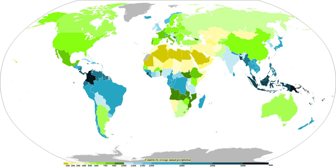A concept used in precipitation measurement is the hydrometeor. Any particulates of liquid or solid water in the atmosphere are known as hydrometeors. Formations due to condensation, such as clouds, haze, fog, and mist, are composed of hydrometeors. All precipitation types are made up of hydrometeors by definition, including virga, which is precipitation that evaporates before reaching the ground. Particles blown from the Earth's surface by wind, such as blowing snow and blowing sea spray, are also hydrometeors, as are hail and snow.